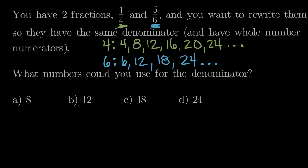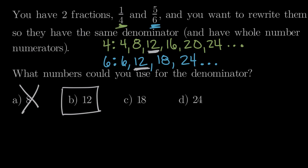Down to our answer choices — what numbers could we use for the denominator? Could we use 8? Looking at our lists, 8 is a multiple of 4, so we could split 4ths into 8ths. But 8 is not a multiple of 6, so we cannot split 6ths into 8ths — 8 will not work as a common denominator. How about 12? 12 is a multiple of 4, and 12 is a multiple of 6 — we could split 6ths into two equal pieces each and get 12ths. So 12 does work as a common denominator. What about 18? 18 is a multiple of 6, but it is not a multiple of 4, so we can rule out 18.